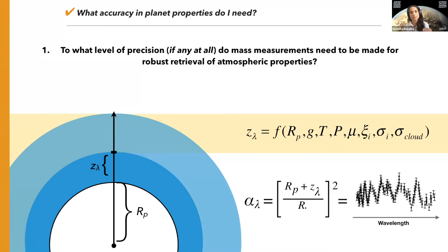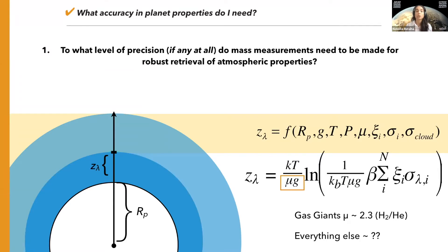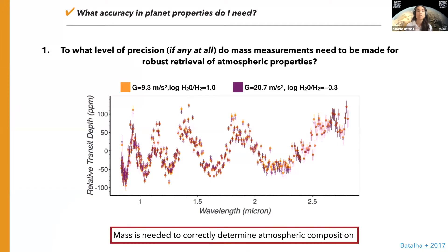Because of this gravity dependence in Z, it had been postulated that you could actually just retrieve gravity as a free parameter and subvert time-intensive radial velocity altogether. The problem is that there are two parameters in this function that are basically degenerate with each other: the mean molecular weight of the atmosphere and the gravity. For gas giants, we pretty much assume they consist of primordial hydrogen-helium atmospheres and their mean molecular weights are basically 2.3-ish. For small planets, or anything that's enhanced in metals, we just can't make that same assumption.